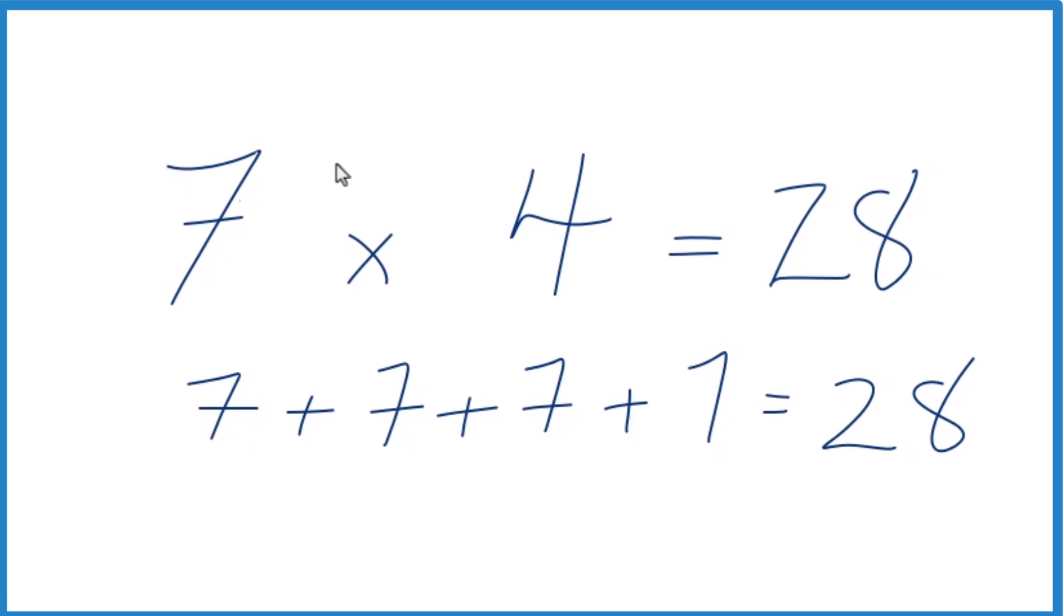You could also write 4 seven times, add them all up, and you get 28. But really, as we do mathematics here, you probably should memorize your multiplication tables. That just makes it so much quicker, makes math a lot more enjoyable, and actually quite easier.